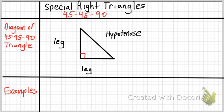A 45-45-90 triangle has two legs which are congruent and it has a hypotenuse. Because the legs are congruent, they share the same numerical value, and we're going to call that value A. So each leg has a value of A, and then using the Pythagorean theorem we can see that the hypotenuse will end up being A times the square root of 2.